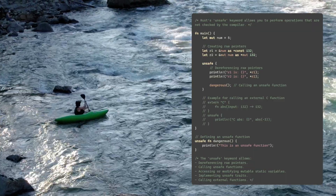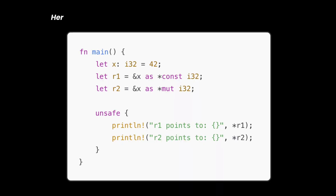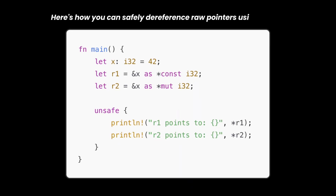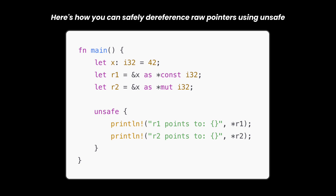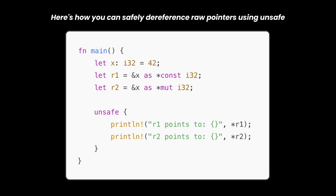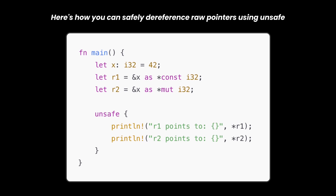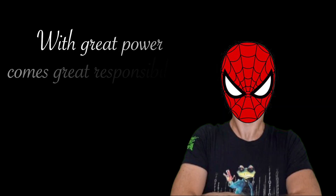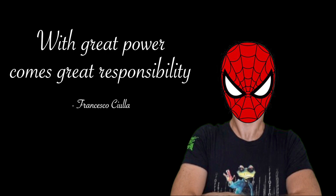Twelve: unsafe code. Rust is a safe language, but it doesn't stop you from diving into the low-level side when you need to. Unsafe code lets you bypass Rust's safety checks. It's intended for scenarios where performance or specific system calls require you to handle memory manually — just remember, with great power comes great responsibility.